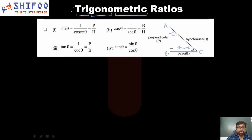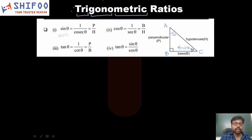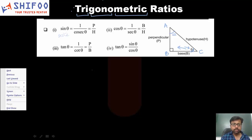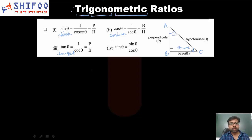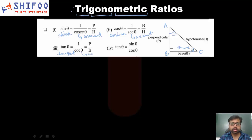Sine theta equals the ratio of perpendicular to hypotenuse. The full form of sin is sine — S-I-N-E. Cos theta is short for cosine. Tan is short for tangent. Cosec means cosecant, sec means secant, and cot means cotangent.